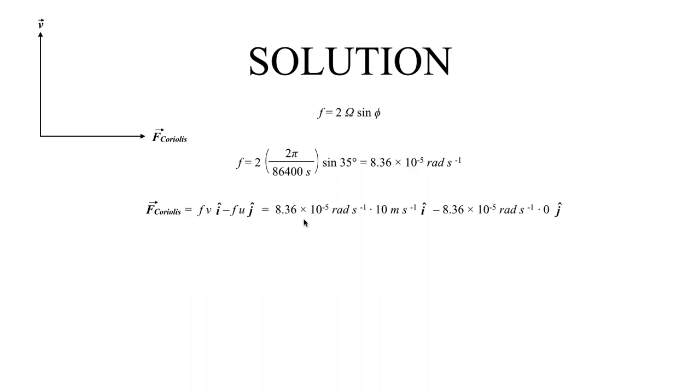Simply plugging in the value that we get up here—the Coriolis parameter times v, which is the velocity or speed of our wind vector—and if we evaluate all that out, we get that the Coriolis force is 8.36 × 10^-4 newtons per kilogram in the positive i-hat direction. So that does in fact point in the easterly direction, or points toward the east.